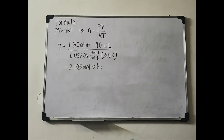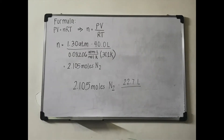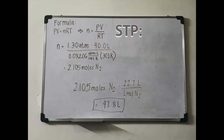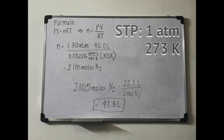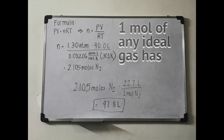Plug in your values to find 2.105 moles of nitrogen. STP conditions are currently defined as a pressure of 1 atmosphere and a temperature of 0 degrees Celsius, or 273 kelvin. Under these conditions, 1 mole of any ideal gas occupies 22.7 liters — this is the molar volume of a gas at STP.